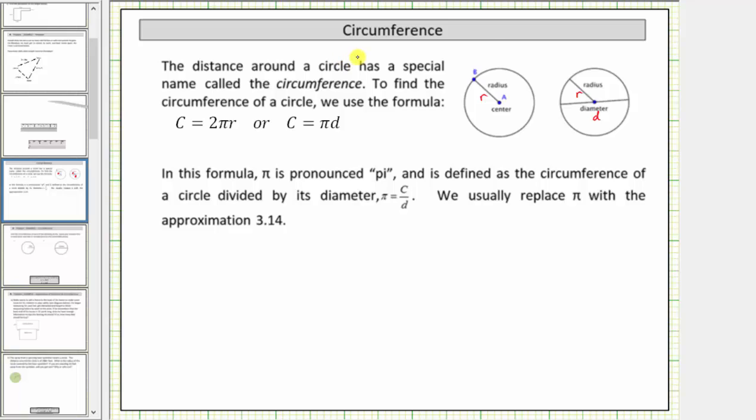Welcome to a lesson on the circumference of a circle. The distance around a circle has a special name called the circumference. So we can think of the circumference of a circle as the perimeter of a circle.